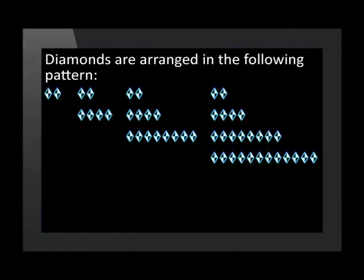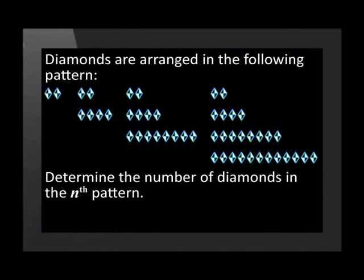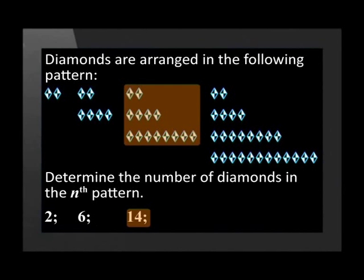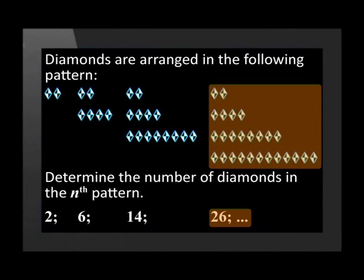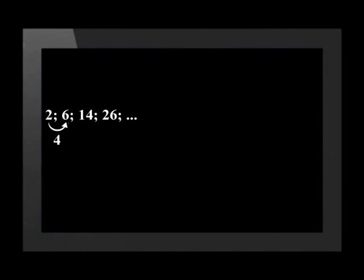Let's practice this method with one example. Diamonds are arranged in the following pattern. Determine the number of diamonds in the Nth pattern. First let's write the number of diamonds in each pattern in numbers. In the first pattern we have 2 diamonds, in the second there are 6, 14 in the third and 26 in the fourth pattern. Whenever a pattern is shown in pictures, the first step is to always rewrite as a number pattern. Now we find the first difference: 6 minus 2 is 4, 14 minus 6 is 8, and 26 minus 14 is 12.